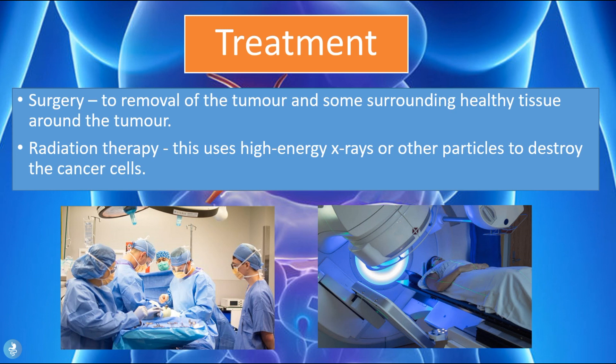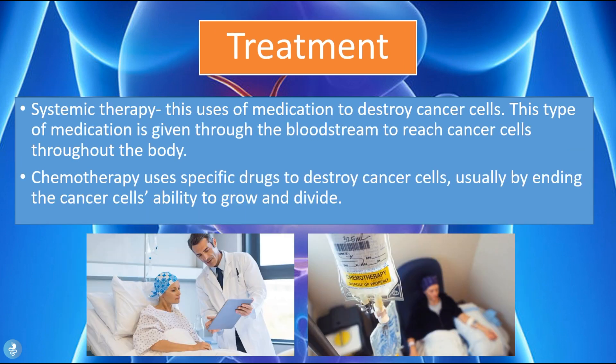Now let's talk about the treatment of gallbladder cancer in general. Surgery to remove the tumor and surrounding healthy tissue is usually done via a cholecystectomy — the removal of the gallbladder. Radiation therapy uses high-energy X-rays or other particles to destroy specific cancer cells. Systemic therapy uses medication delivered through the bloodstream to reach cancer cells throughout the body. And finally, chemotherapy uses specific drugs to destroy cancer cells, typically by ending the cancer cells' ability to grow and divide.